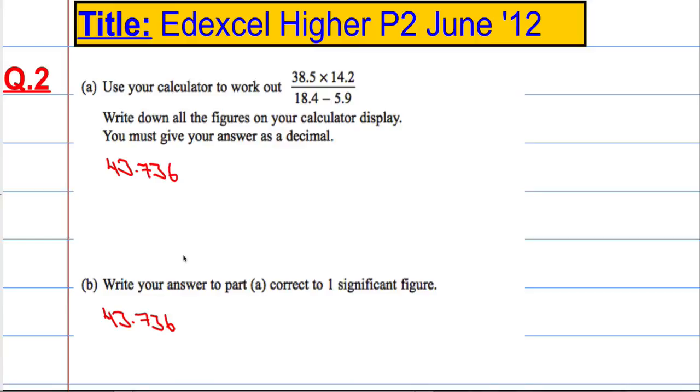To one significant figure, I go to the first digit that's not zero. That means I'm rounding to the nearest 10 in this case. That's one significant figure.